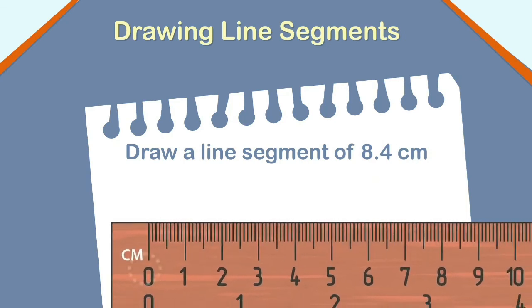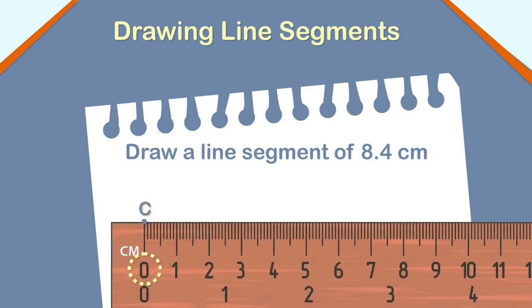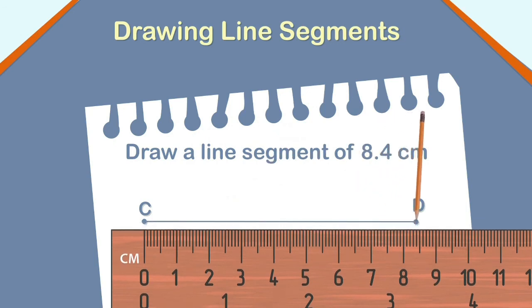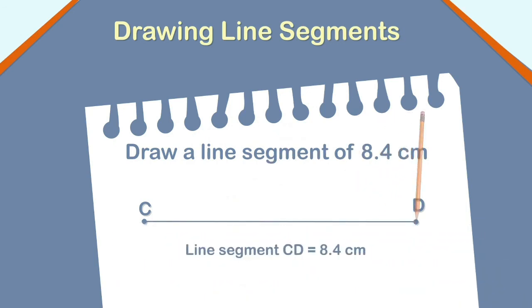First, mark point C against 0 cm. Count up to 8 cm on the ruler to show 8 cm and count ahead 4 small divisions after 8 to show 8.4 cm. Mark the point and name it as point D. So, the line segment CD measures 8.4 cm.